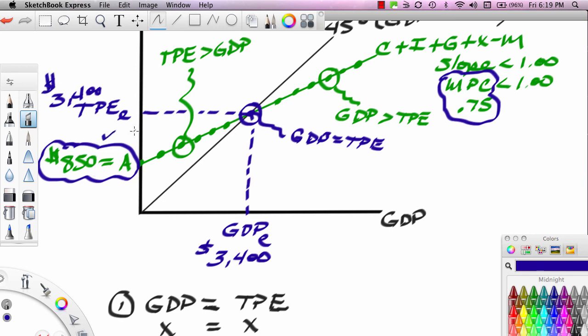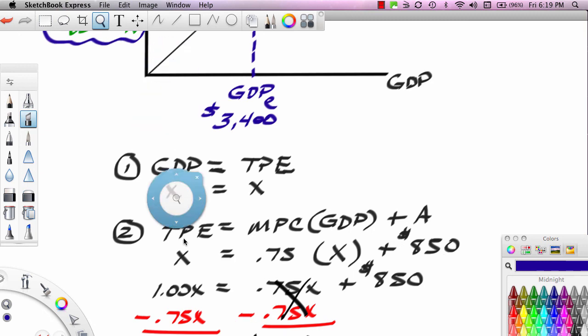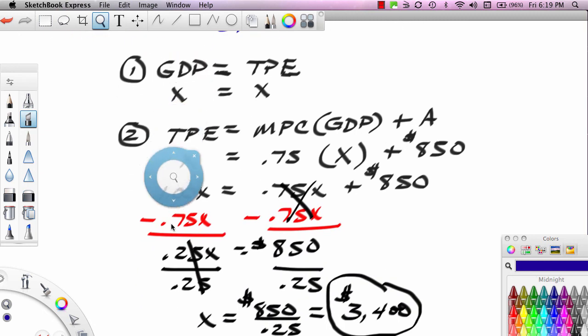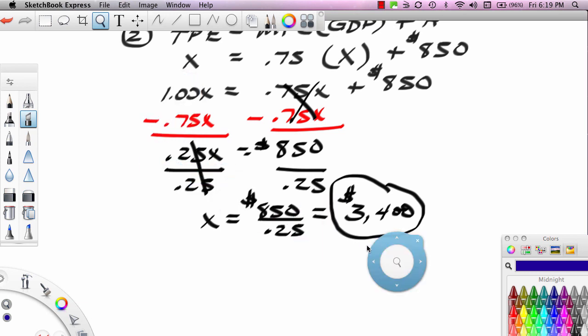So if we have A, and if we have MPC, we can find equilibrium GDP. Now, what I showed you is the long cut. I can simplify this a little bit, the calculations, and formalize what we need to know. So you'll notice here at the end, you notice here at the end that this boiled down to this whole combining those two formulas and solving. This boiled down to 850 over 0.25. But really, what is 850 over 0.25? 850 is A. And what is 0.25? 0.25 is MPS.